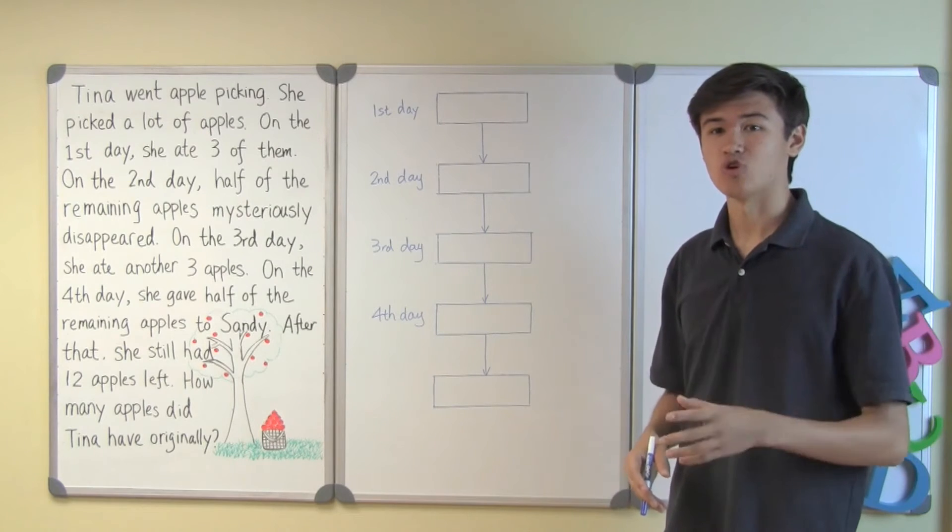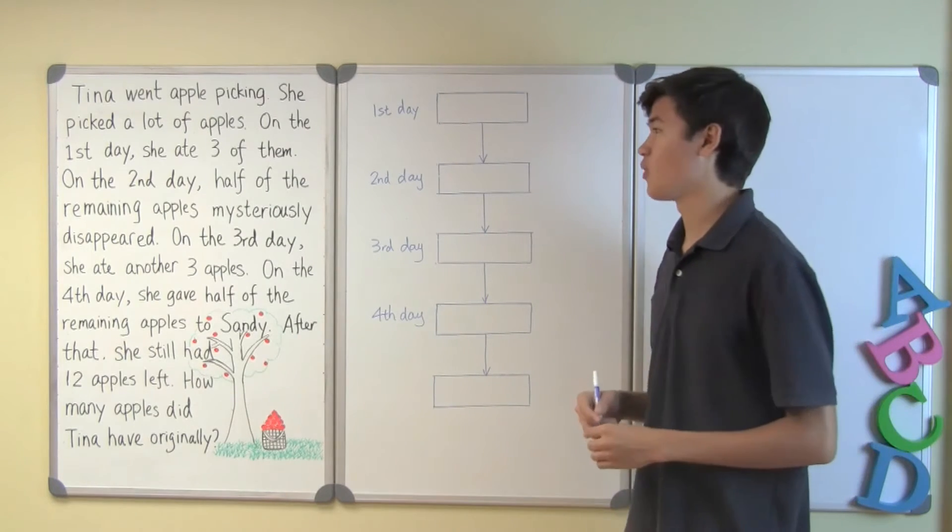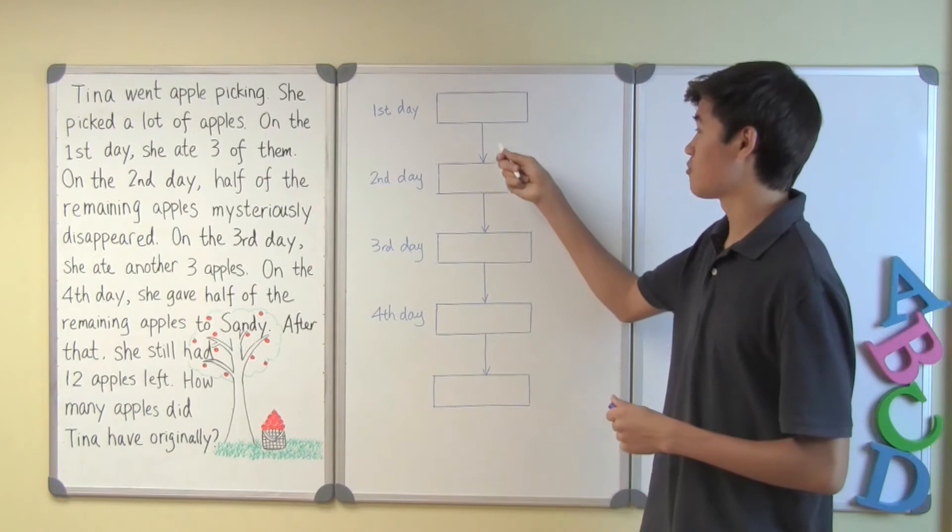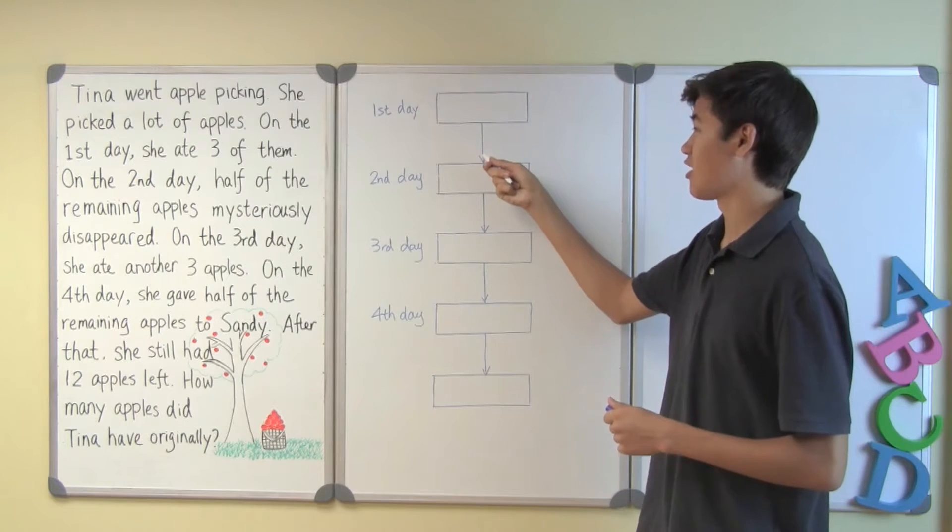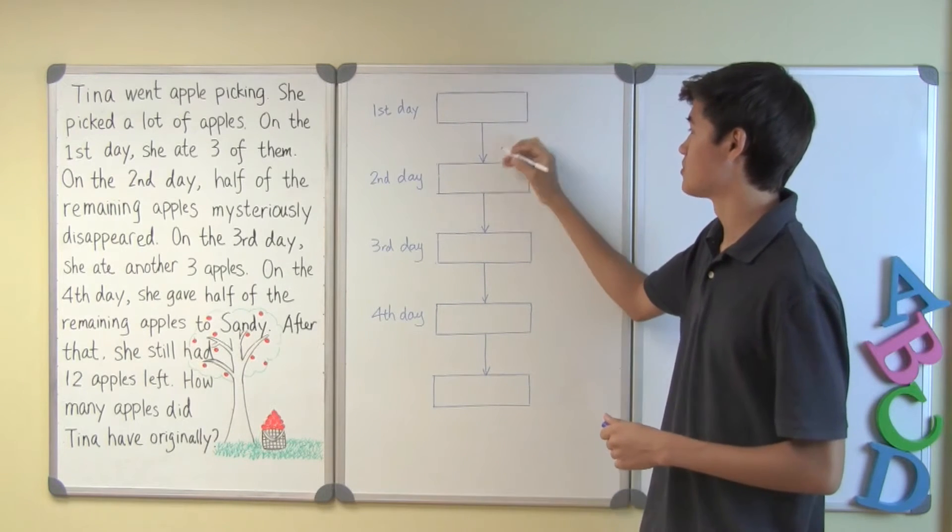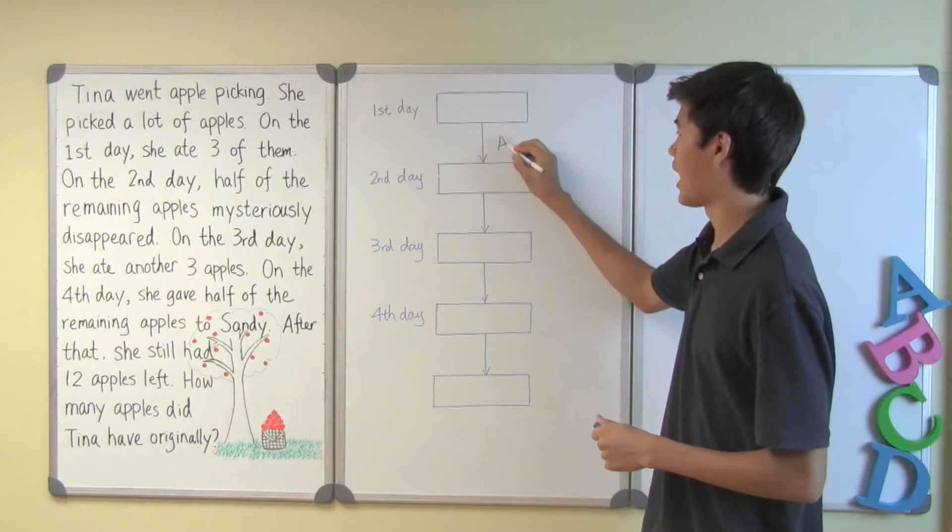Now let's go through the question. According to the question on the first day Tina ate three apples. We can put that information right here because this arrow indicates a change between the number of apples between day one and day two. So Tina ate three apples.